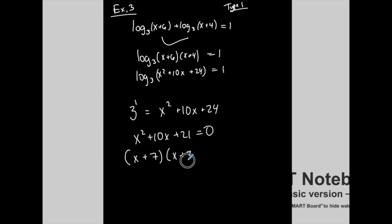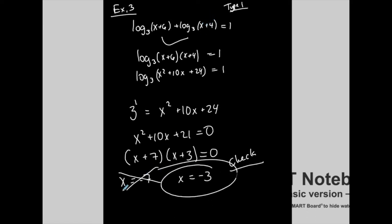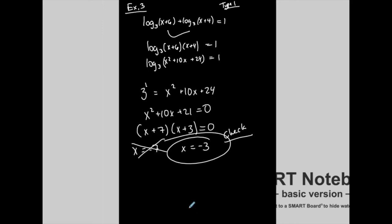Factoring gives two solutions: negative 7 and negative 3. But before claiming them as solutions, I check by plugging back into the original equation. If I plug in negative 7, I get negative 7 plus 6 equals negative 1 — I can't have a negative attached to a log, so negative 7 is not a solution. If I plug in negative 3, I get negative 3 plus 6 equals positive 3, and negative 3 plus 4 equals positive 1 — no problem. So negative 3 is the answer. Always check your solutions for logarithmic equations.